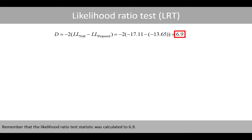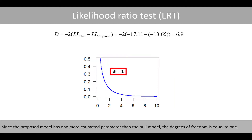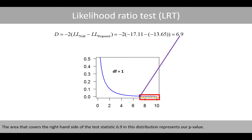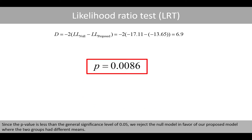The likelihood ratio test statistic was calculated to 6.9. Usually, the likelihood ratio test statistic is assumed to follow a chi-square distribution with degrees of freedom equal to the additional number of estimated parameters in the proposed model. Since the proposed model has one more estimated parameter than the null model, the degrees of freedom is equal to 1. The area covering the right-hand side of the test statistic 6.9 in this distribution represents our p-value, which is equal to about 0.0086. Since the p-value is less than the general significance level of 0.05, we reject the null model in favor of our proposed model.